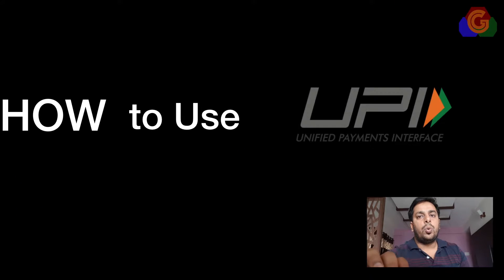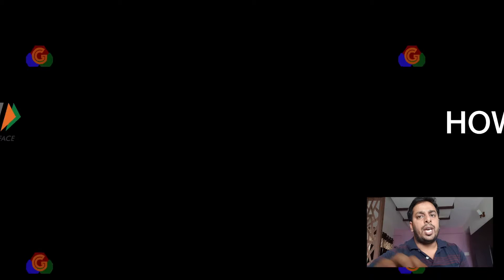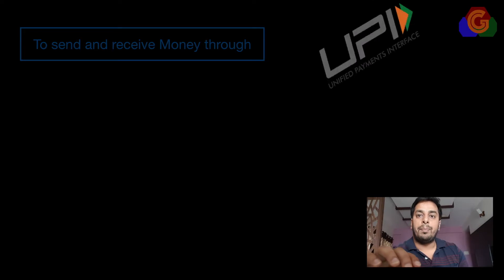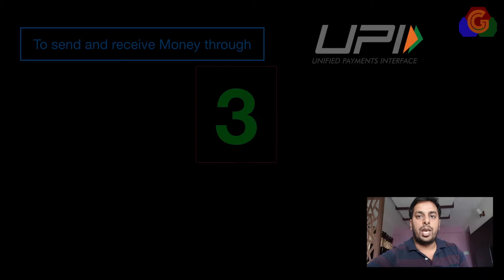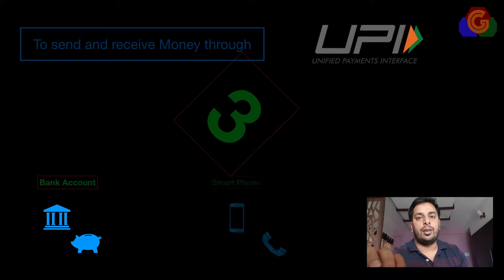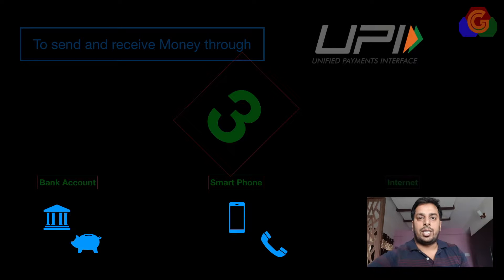So the next obvious question is: how to use UPI? To send and receive money through UPI you require three things — a bank account, a mobile number which is linked to that bank account, and of course a smartphone with internet. Let's go step by step.